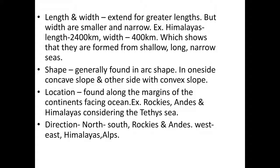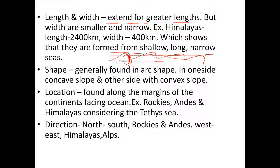Folded mountains extend for greater lengths but are narrow in width. For example, the Himalayas has a length of 2400 kilometers but a width of only 400 kilometers. This shows that they are formed from shallow, long, narrow seas.